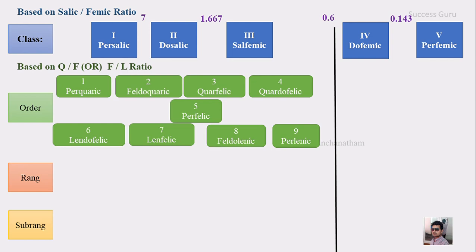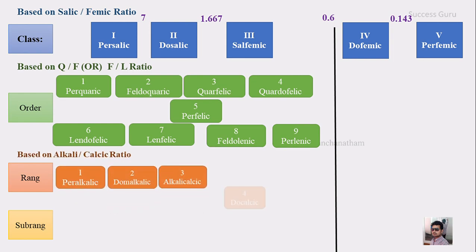Remember these terms because you have to state them in your answer. This order has been further subdivided into 5 ranges based on the alkali-by-calcic ratio. The first range — predominance of alkali — is termed peralkalic. The second one is domalkalic, dominance of alkali. The third is alkali-calcic, where both are roughly equal. The fourth one is do-calcic. And the fifth one is per-calcic.